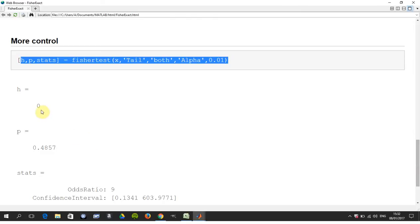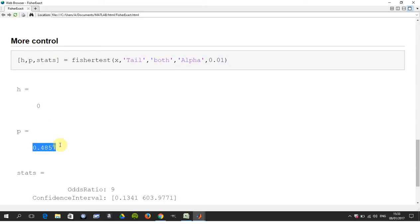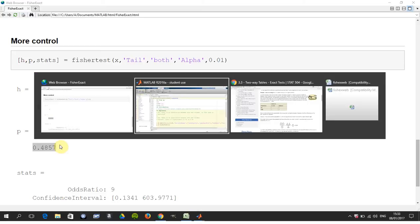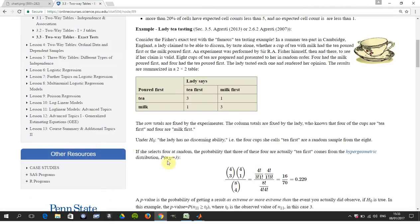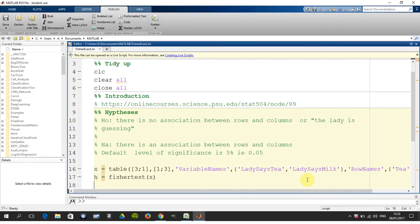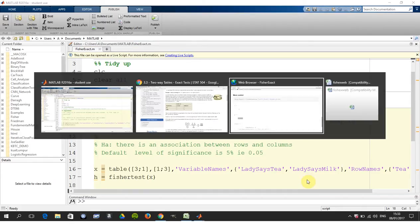Same thing as before, h equals zero so we're accepting the null hypothesis, the lady is making it up as she goes along. And the probability here is 0.4857. Now the eagle eye amongst you will see that the 0.4857 is not the same answer as we got here, 0.0229.